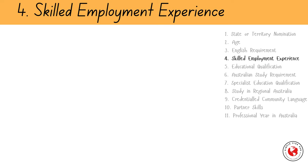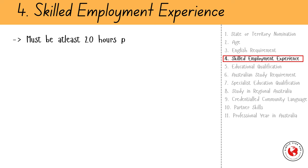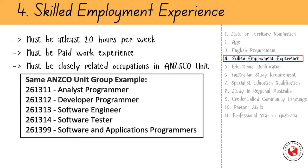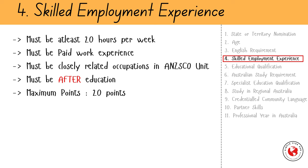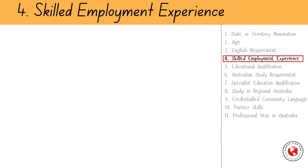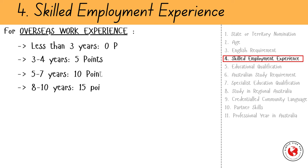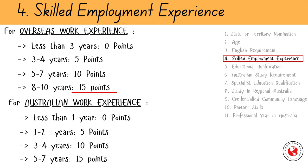The next factor is work experience, both overseas and in Australia. For employment to be counted, you must be employed for at least 20 hours per week and it must be paid work experience. You can claim points for only closely related occupations in the same ANZSCO unit group, and the employment must be after your qualification to be counted. The maximum combined points for onshore and offshore work experience are 20 points. For overseas work experience, you can start earning a minimum of 5 points with more than 3 years of experience in the last 10 years, up to a maximum of 15 points for 8 or more years. If you have Australian experience, you can start getting points with just 1 year of working.